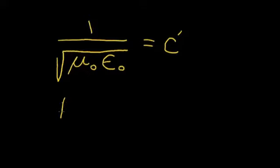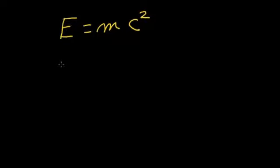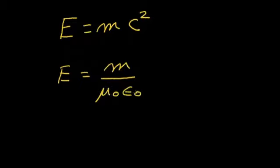Now remember Einstein's famous equation, E equals mass times the speed of light squared, E equals mc squared. So if we substitute the speed of light squared in terms of mu zero and epsilon zero, we can rewrite Einstein's famous equation. E equals m divided by mu zero times epsilon zero. So we see that mu and epsilon are very fundamental to the world we live in.